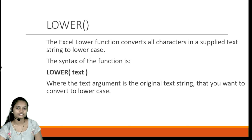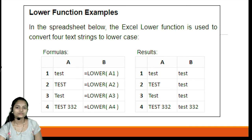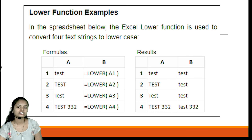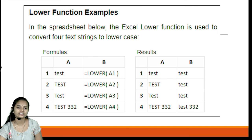Next is the LOWER function, which converts all characters in a string to lowercase. This Excel LOWER function syntax is LOWER(text). In the example, column A contains the input strings and column B shows the applied function. If the string is already in lowercase and you apply LOWER, the result is the same. If all characters are in uppercase and you apply the LOWER function, the result will have all characters in lowercase.